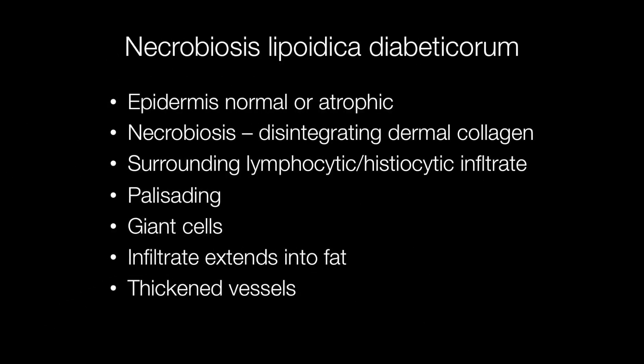Histologically, the overlying epidermis is either normal or atrophic. As the name implies, there is necrobiosis with disintegrating dermal collagen. This is surrounded by a lymphohistiocytic inflammatory infiltrate that may be palisaded and contain some giant cells. The infiltrate may extend into the underlying fat in the subcutaneous tissue. Another feature is the presence of thickened blood vessels. It is thought likely that it is the vascular damage that causes the necrobiosis to occur.